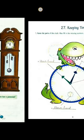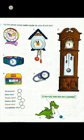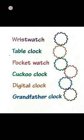Now come to the next page. Question number 2. You have to write the correct picture number beside the name of each clock. Here you can see the different types of clock. Let's see the clock names: wrist watch, table clock, pocket watch, cuckoo clock, digital clock, grandfather clock. These all are different types of clock names.